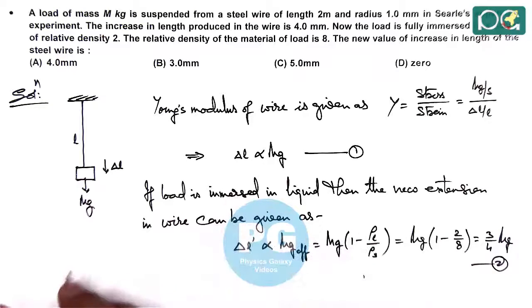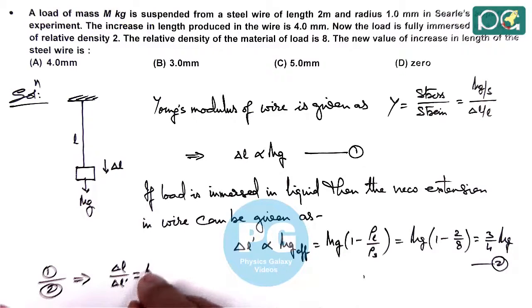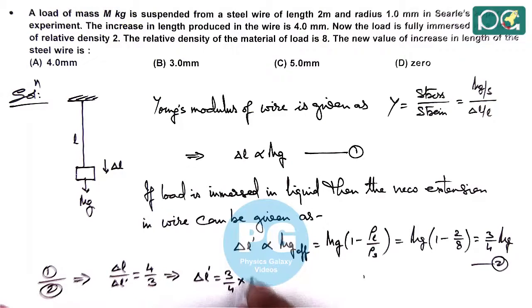From equation 1 and 2, we can write equation 1 divided by 2 gives us delta L by delta L dash equals 4 by 3. So delta L dash equals 3 by 4 times delta L.